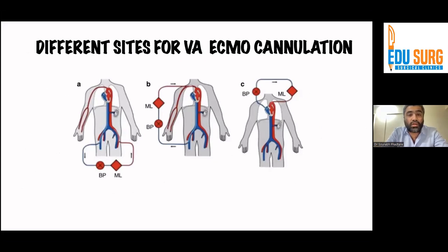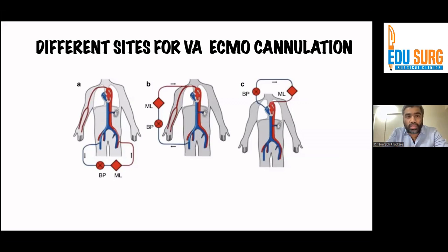As you can see, there are different sites for VA ECMO cannulation. VA ECMO can be used peripherally or centrally. For a peripherally inserted approach, as seen in Figure A, both femorals are used — blood is drawn from the femoral vein, goes over the blood pump or the membrane lung, and then given back to the patient through the femoral artery. For some patients who have limb ischemia, as seen in Figure B, we can use the axillary artery as well — we have used this in one of our patients. The blood is drawn from the femoral vein, goes over the blood pump and membrane lung, and is then given to the axillary artery. Whenever you use an axillary artery, you will have to have a vascular surgeon involved, as they use grafts as well.